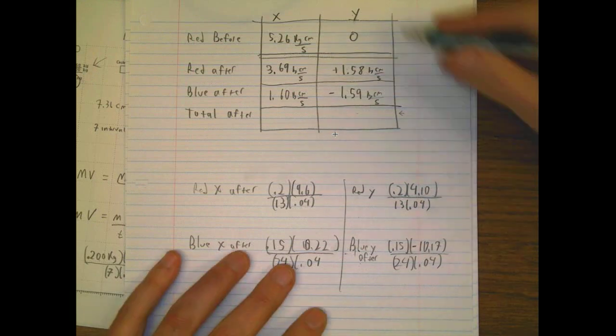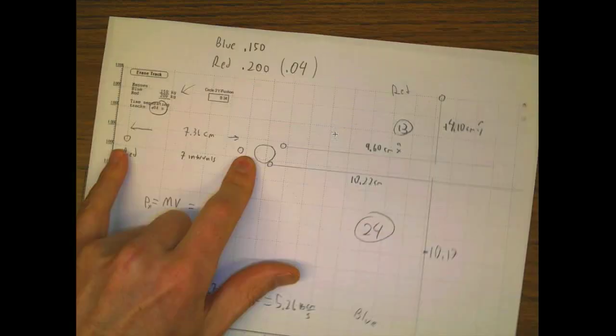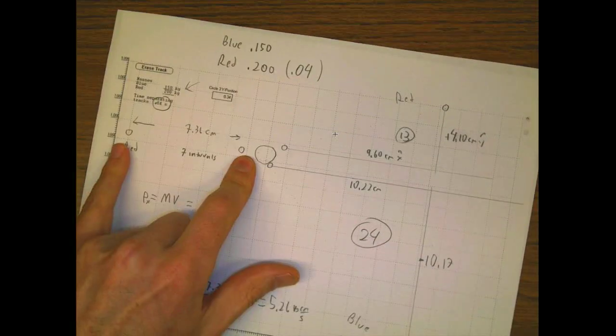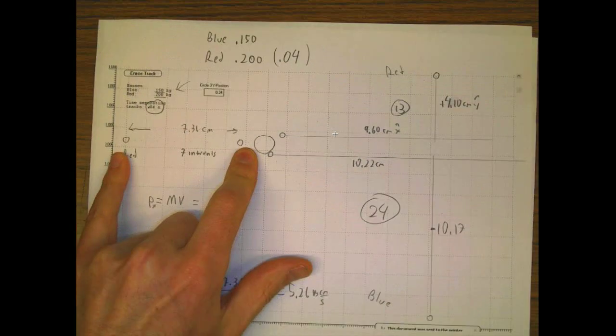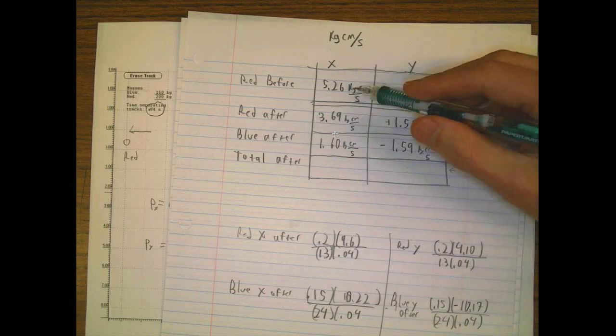This was our momentum before - we had just the red guy moving along in purely the x direction. Here is our red before in the x direction, and we had no y.